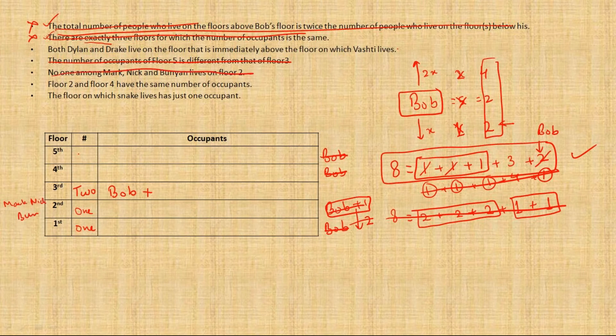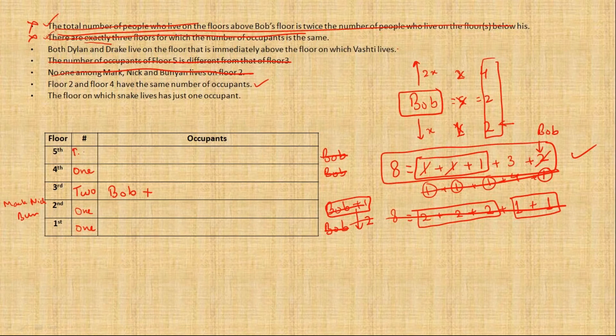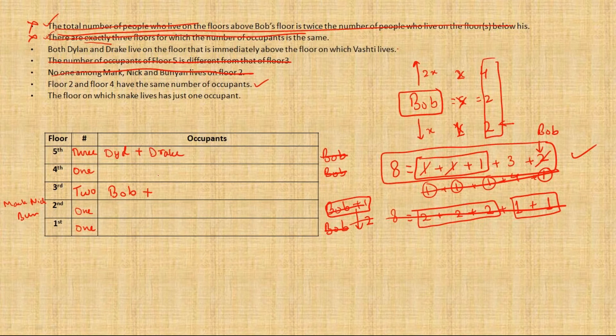Floor 2 and floor 4 have the same number of occupants. Now this gives us the major breakthrough needed. Second floor, we know already there is 1 person. So 4th floor also has to have 1 person, and here there have to have 3 people. And we also now know Dylan and Drake are living on the 5th floor, and Vashti lives alone on the 4th floor. There is 1 more person required on the 5th floor, 1 person on this.